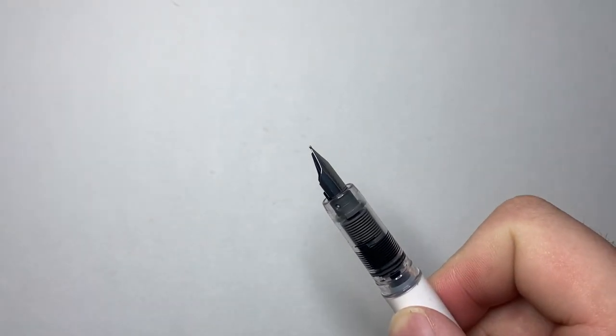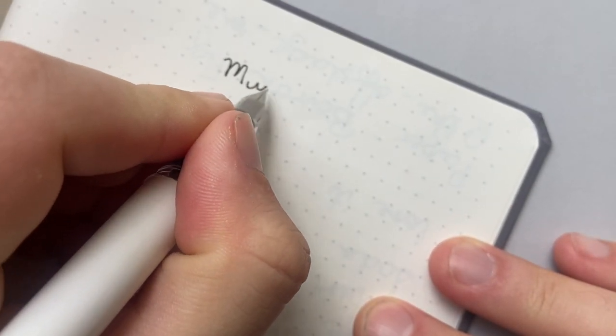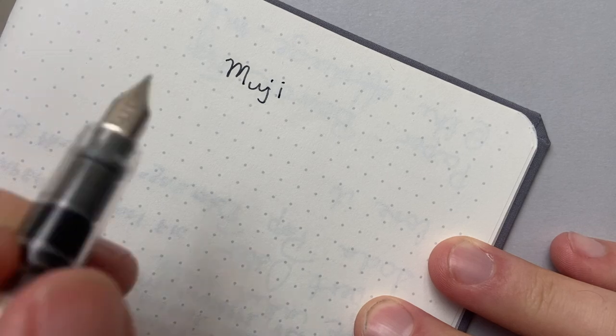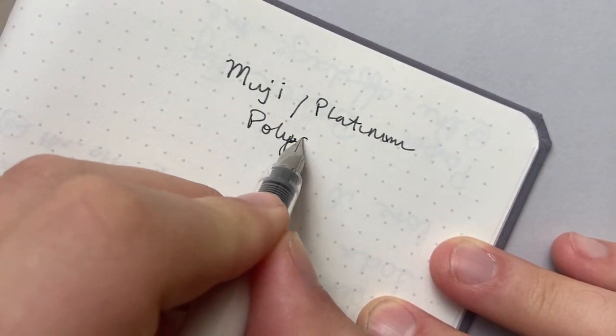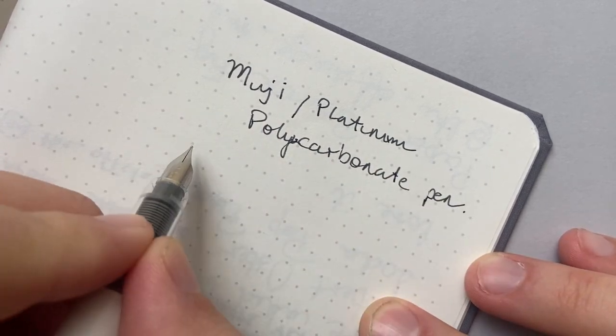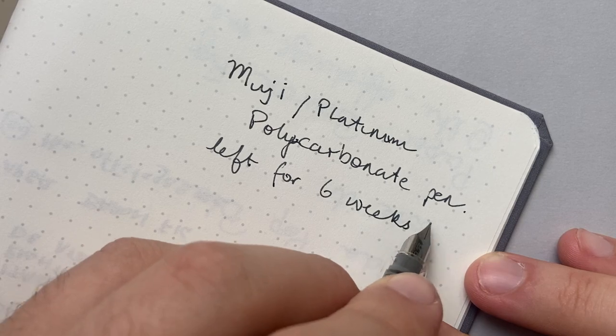And you can see actually it's got that same liner in there, which I'm assuming is that slip and seal liner that Platinum is so well known for. In fact, when I actually left this pen in my drawer for about I think it was six weeks and tried it out, and I've got a video to show here, and it wrote first time, which is what you would expect from Platinum, like the Preppy.